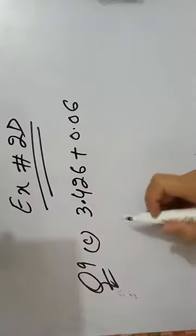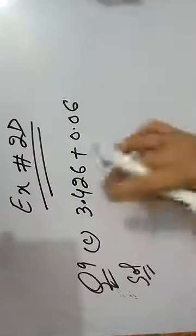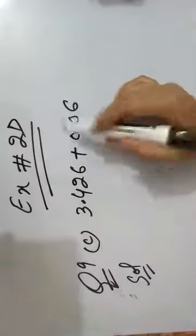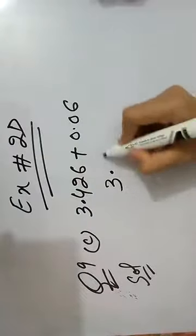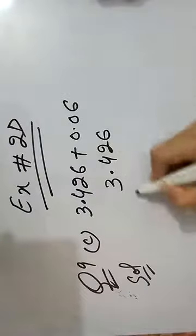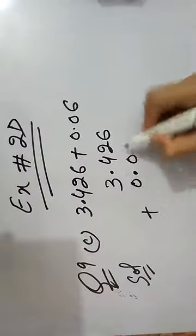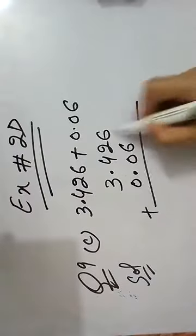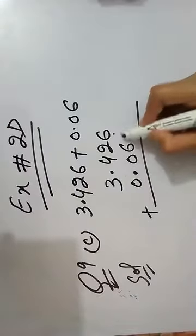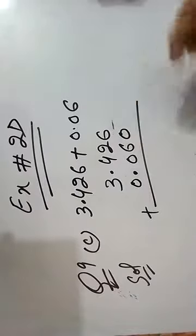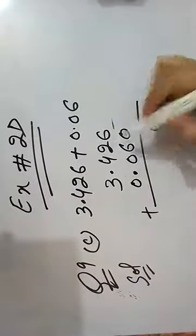Now we will solve question number 9, part C, which is 3.426 plus 0.06. So let's start: 3.426 plus 0.06. Here nothing is written, so we will write it as 0.06 plus 0. 6 plus 2 is 8, 4 plus 0 is 4, 3 plus 0 is 3.